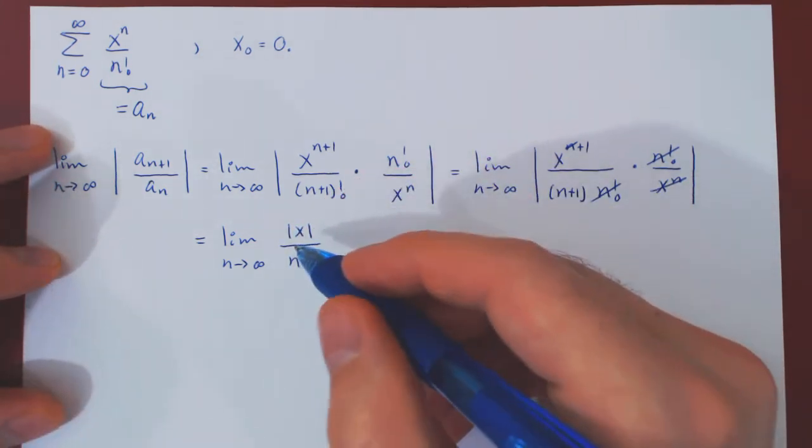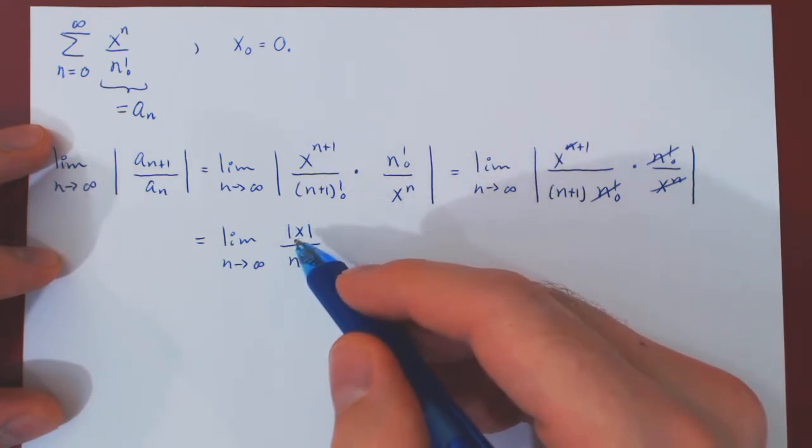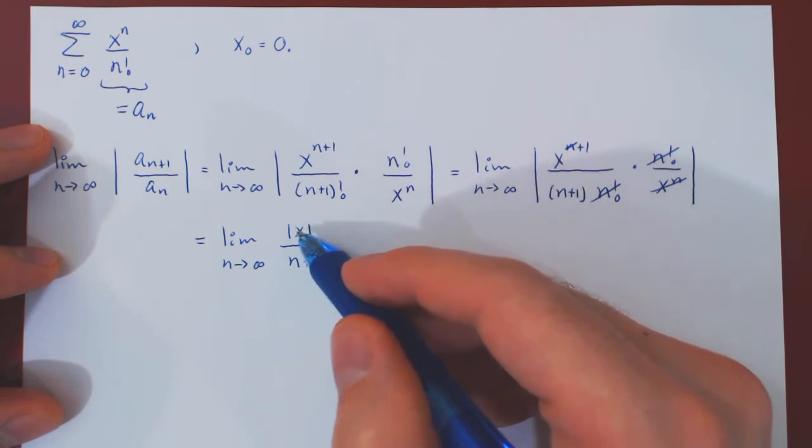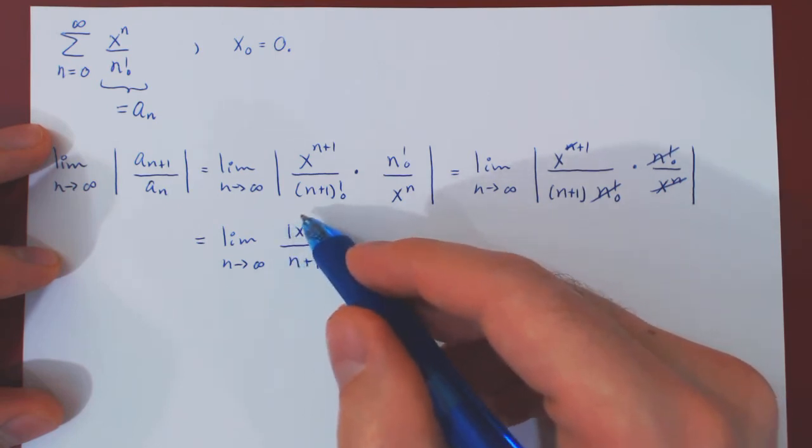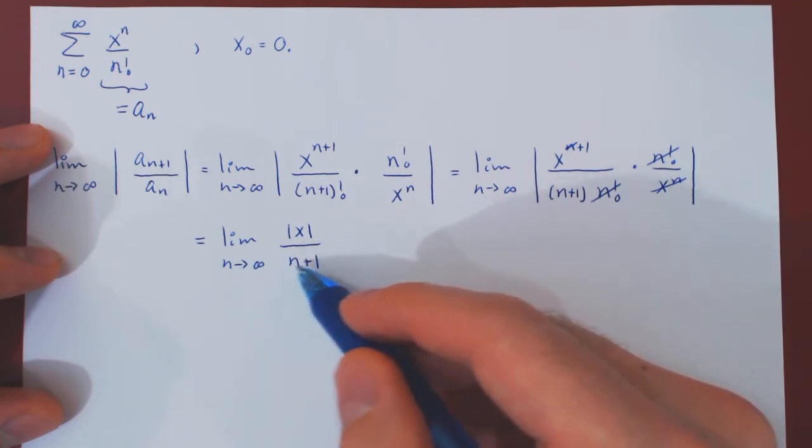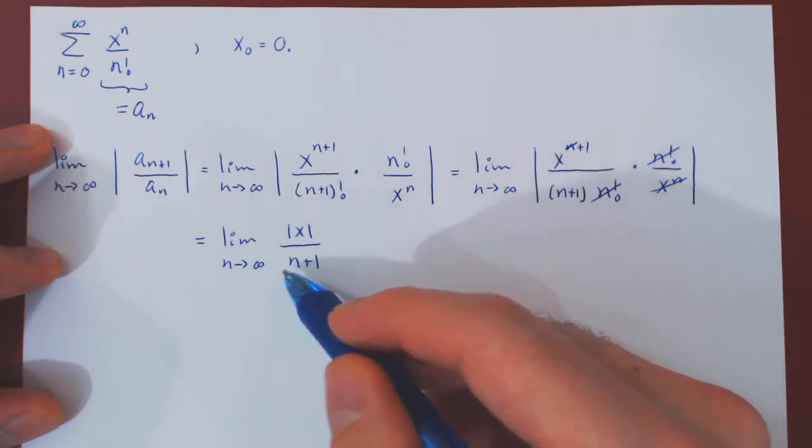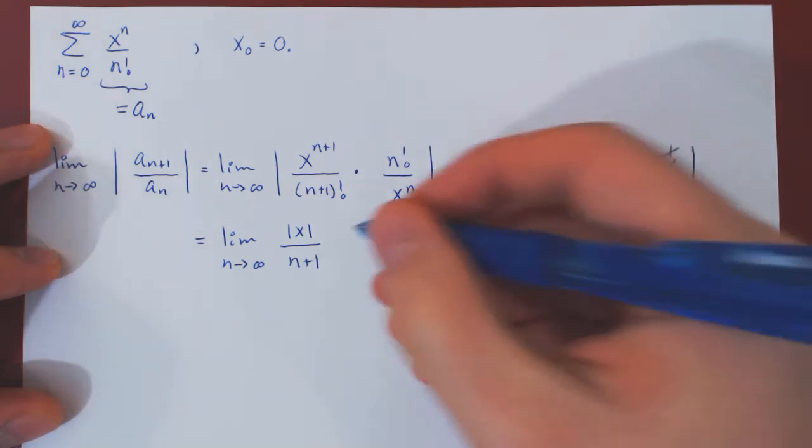Let me think of why this is a rather trivial limit. x is some fixed real number, but no matter the value of x, what we have here is a constant over (n+1). And as n tends to infinity, n+1 tends to infinity, so we have a constant over something which blows up to infinity, therefore the limit is 0.